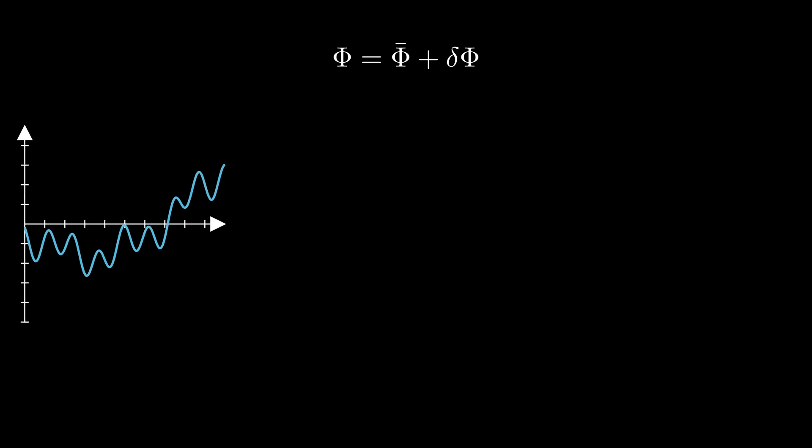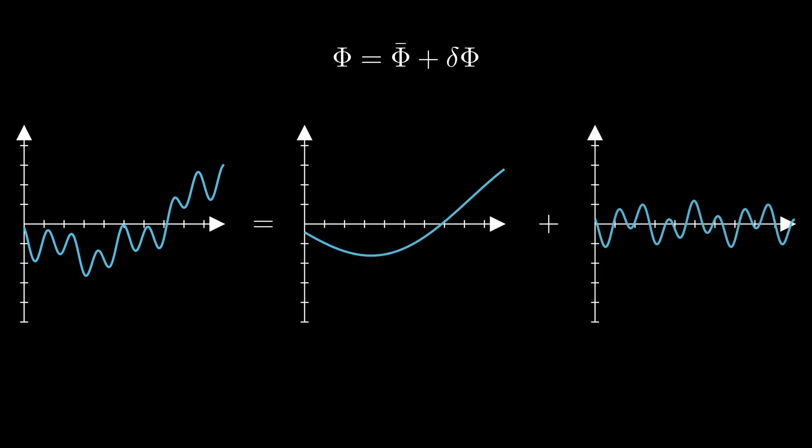Now we can be much more specific about what we mean by averaging or coarse graining. Let's say we have some state phi that we split into a large-scale part that we call phi bar, and some small-scale part we will call delta phi. For now, this sum is purely symbolic. We will not be very rigorous about how we go about making this split, but you can think of phi bar as varying slowly, and delta phi as encoding whatever quickly varying information is lost in phi bar.